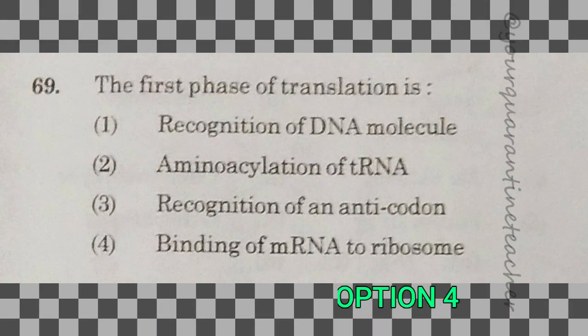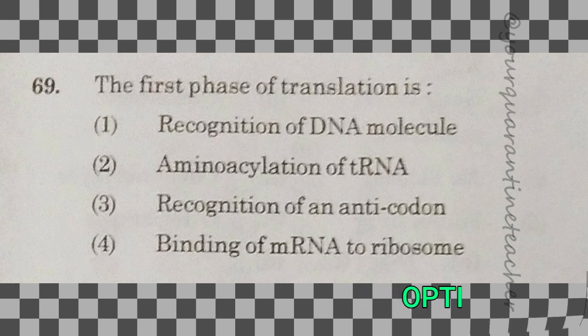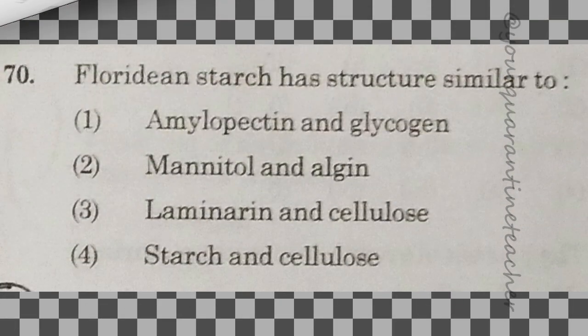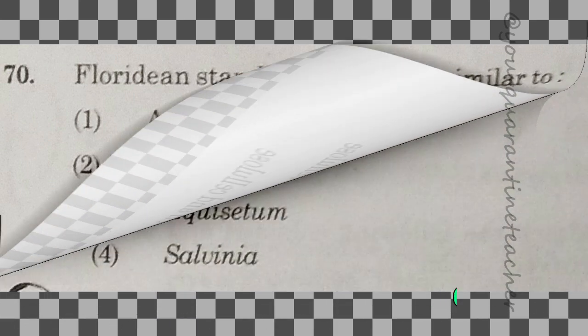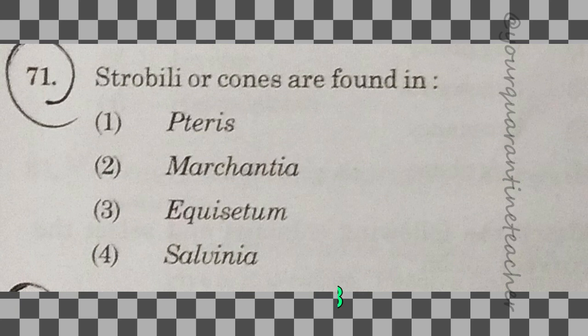69th question: the first phase of translation — binding of mRNA to the ribosome — is the correct answer. 70th question: Floridian starch has a structure similar to option 1 — amylopectin and glycogen.